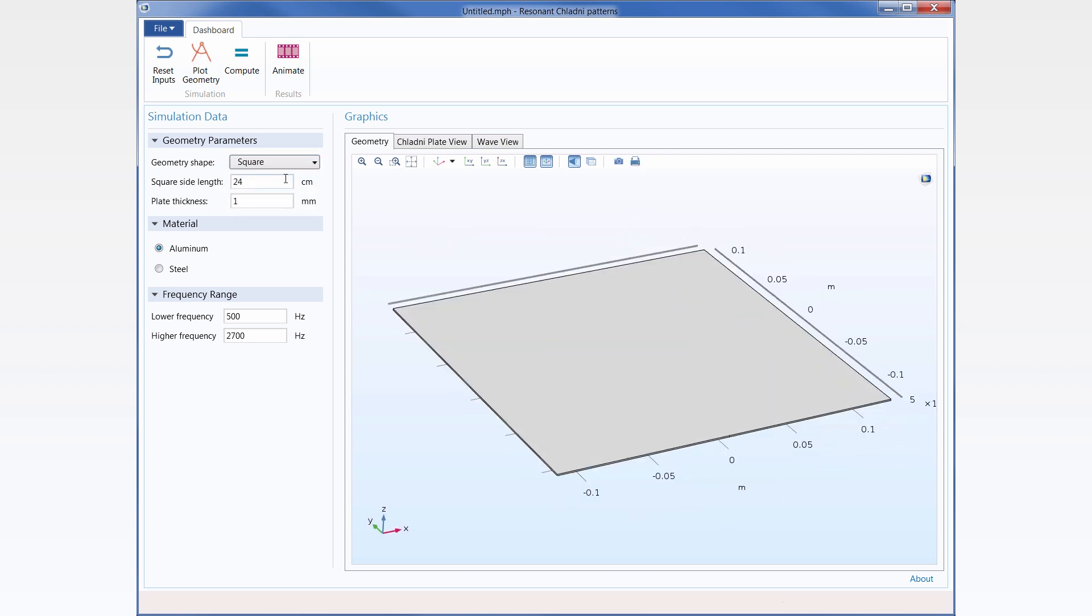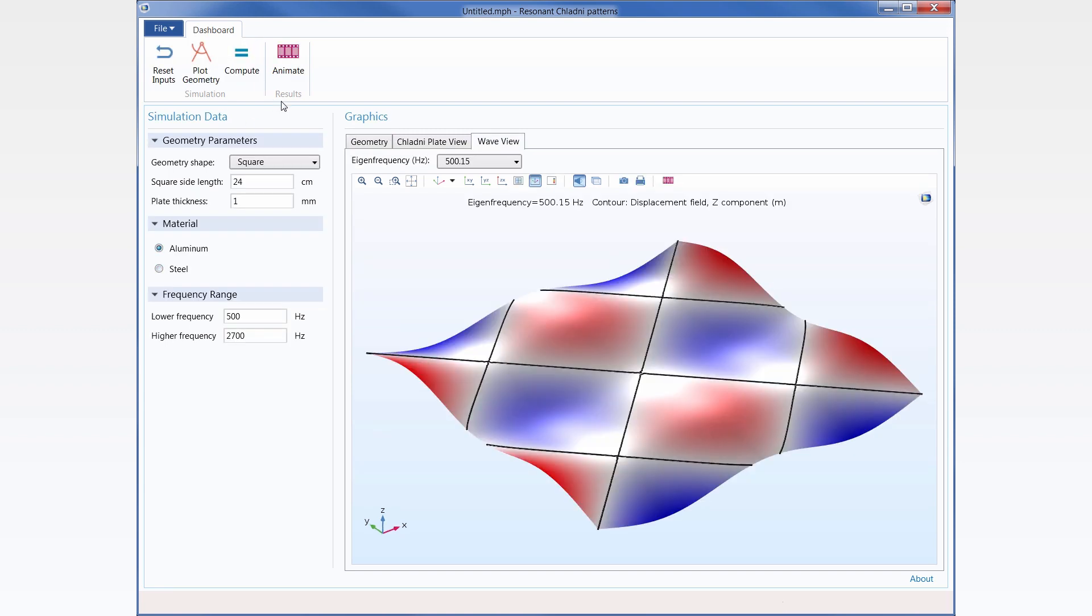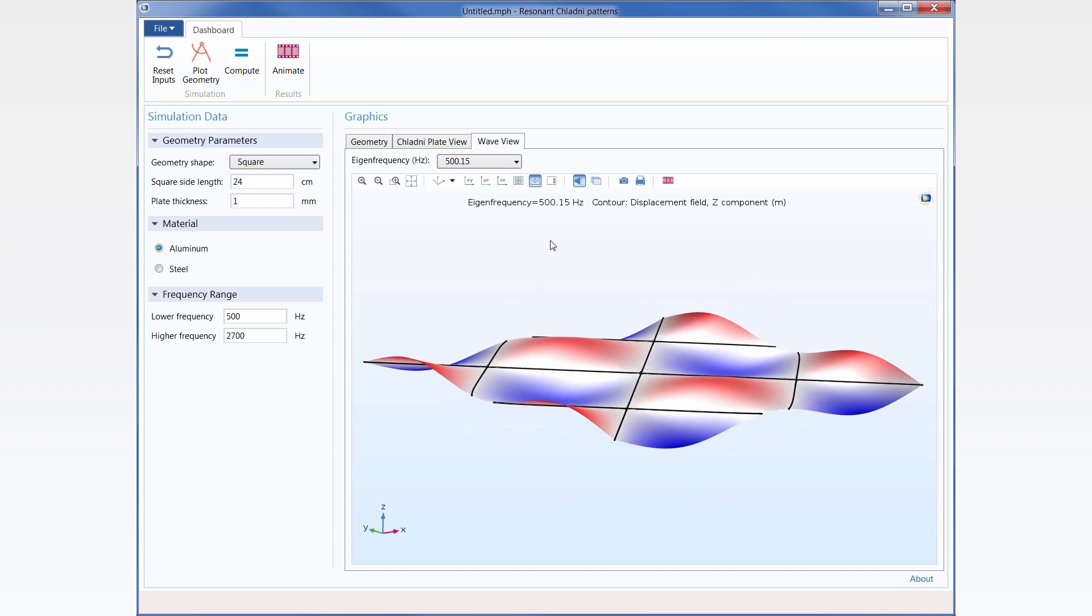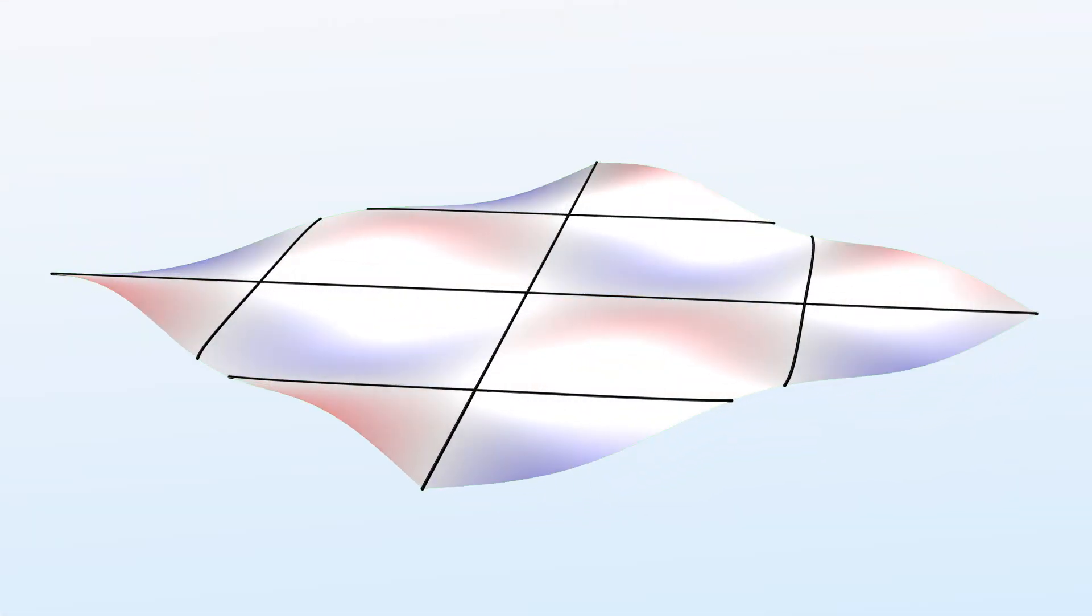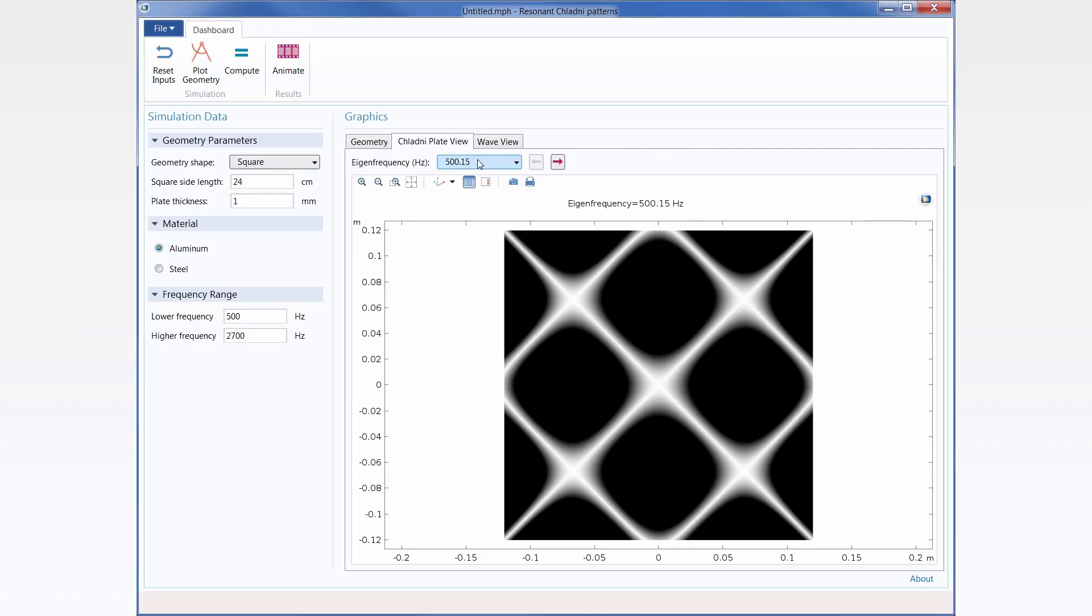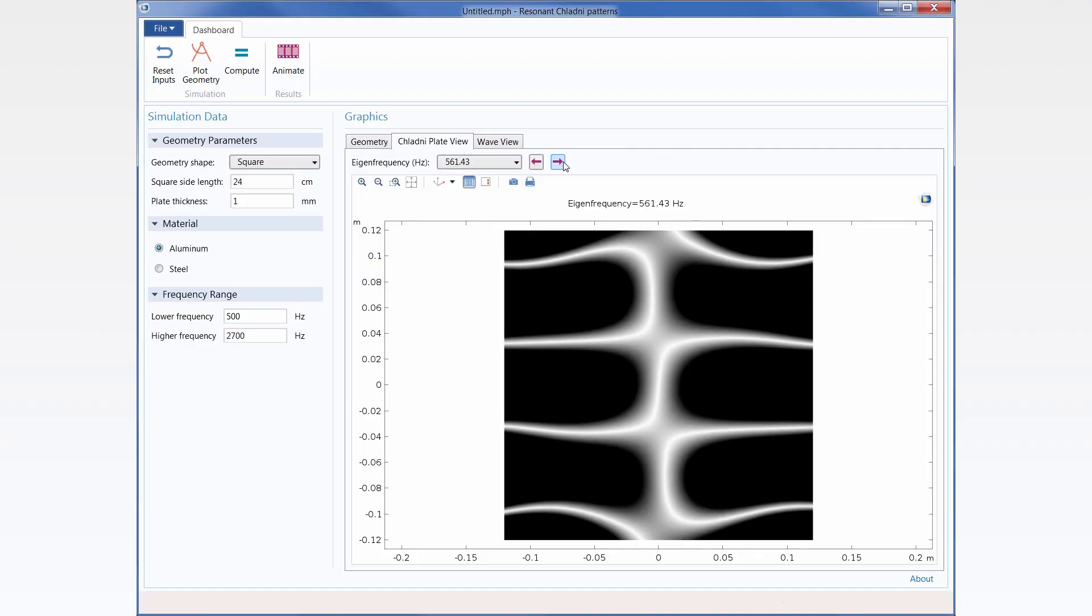They have a fixed constraint at the center and are usually made out of steel or aluminum, like this one. When a vibration excites the plate, the standing waves form patterns called nodal lines. The sand gathers in these lines and forms distinct patterns for different tones.